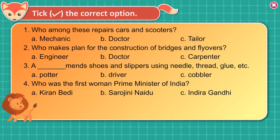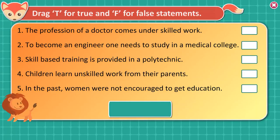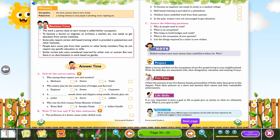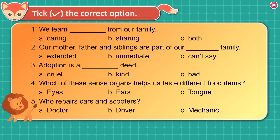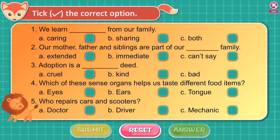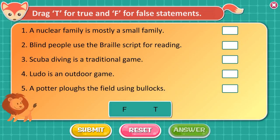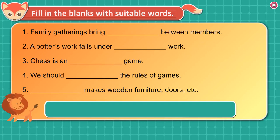Activity: Look at the pictures of people and drag their professions. Tick the correct option. Drag T for true and F for false statements. Fill in the blanks with suitable words.